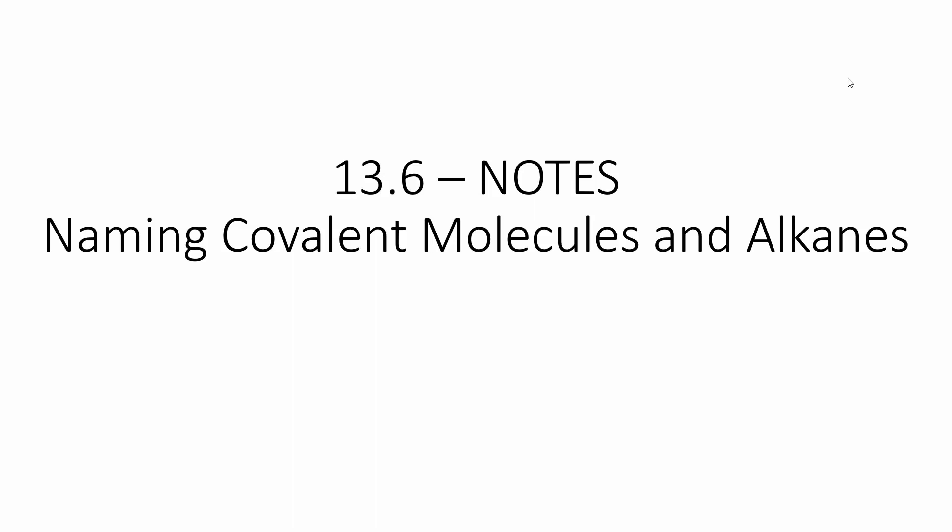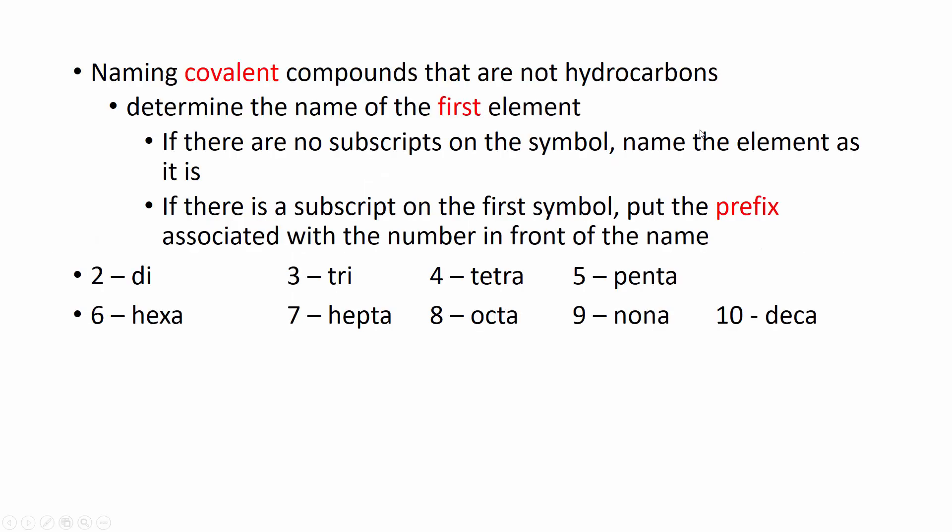So why is carbon dioxide CO2 and carbon monoxide is CO? You probably already can figure out where that's going. You're going to see the prefixes are telling you something. Then we'll also name alkanes. Alkanes are a class of hydrocarbon. When we're naming a covalent compound, we need to understand the prefix system. So this is the prefix system you would have available to you on any quiz or homework: di, tri, tetra all the way to deca.